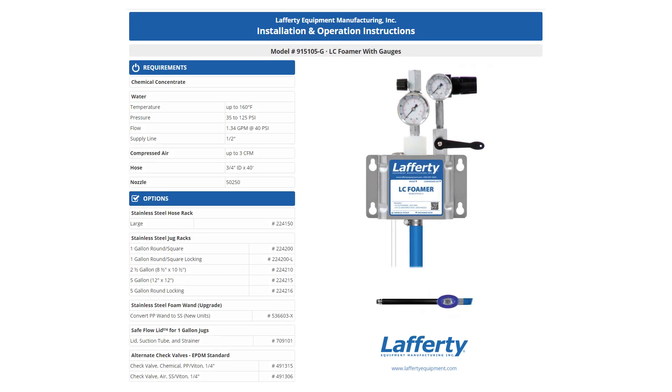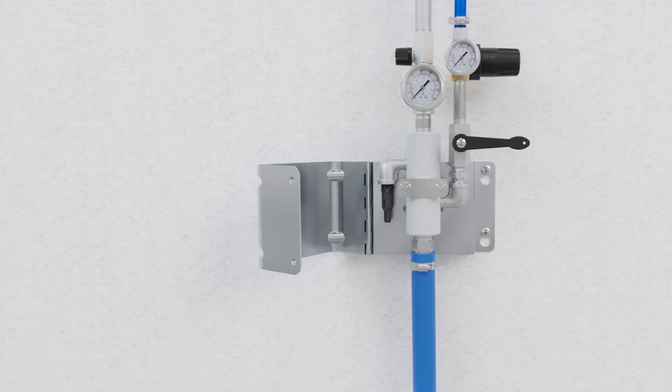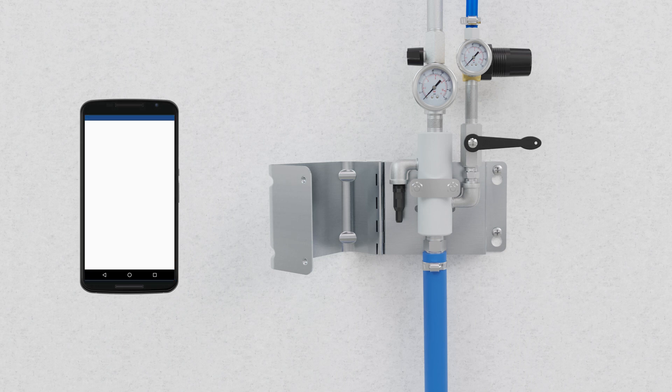According to the instructions for our unit, the water flow rate is 1.34 gallons per minute at 40 psi. We have also measured our actual water pressure at 40 pounds per square inch.